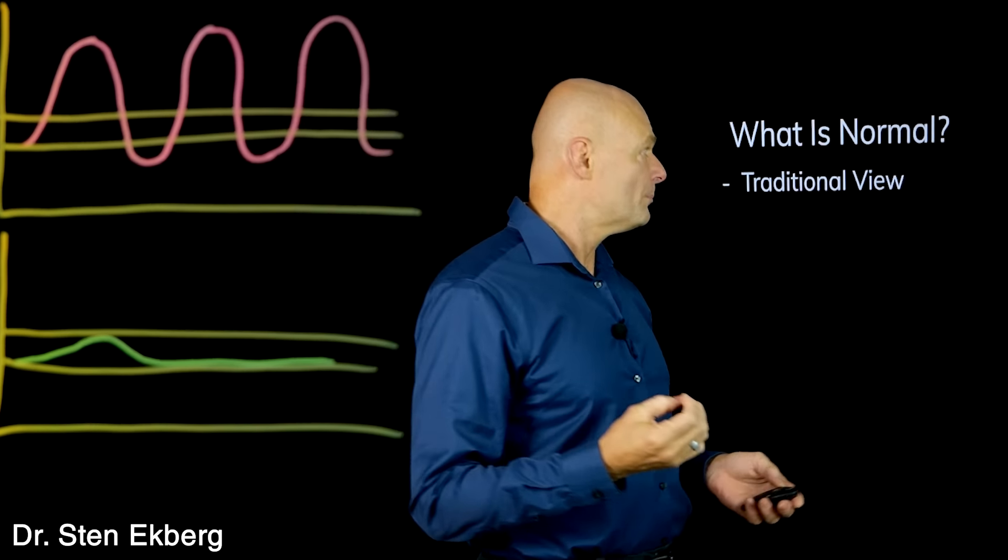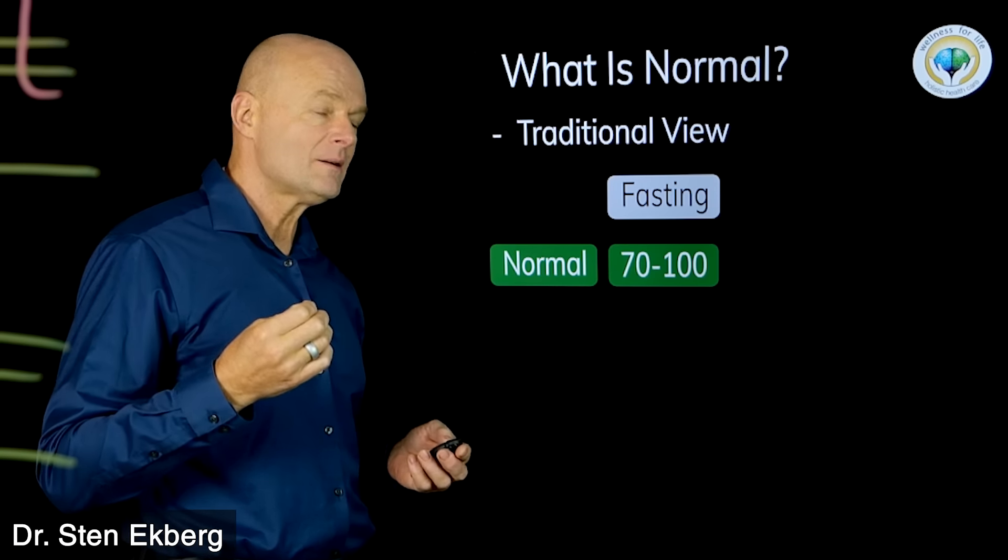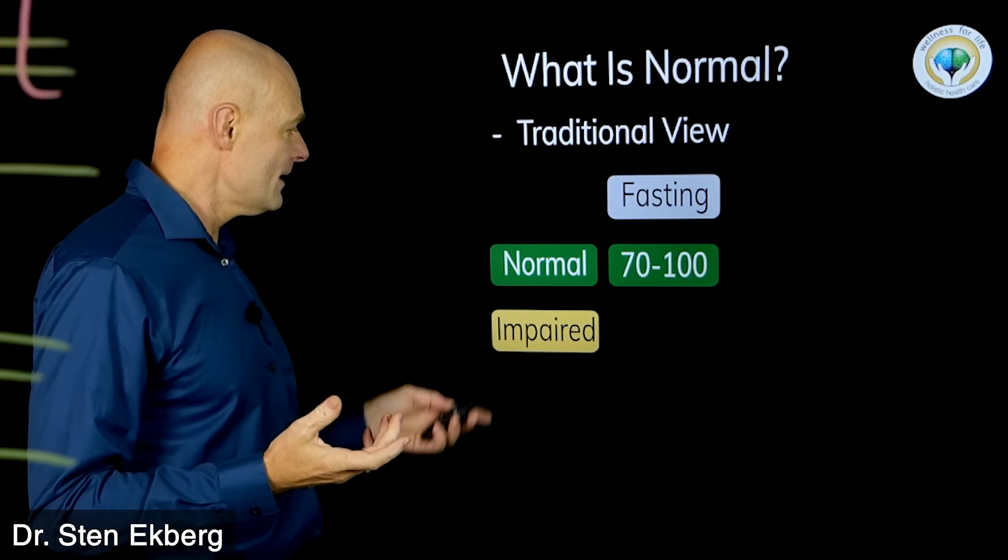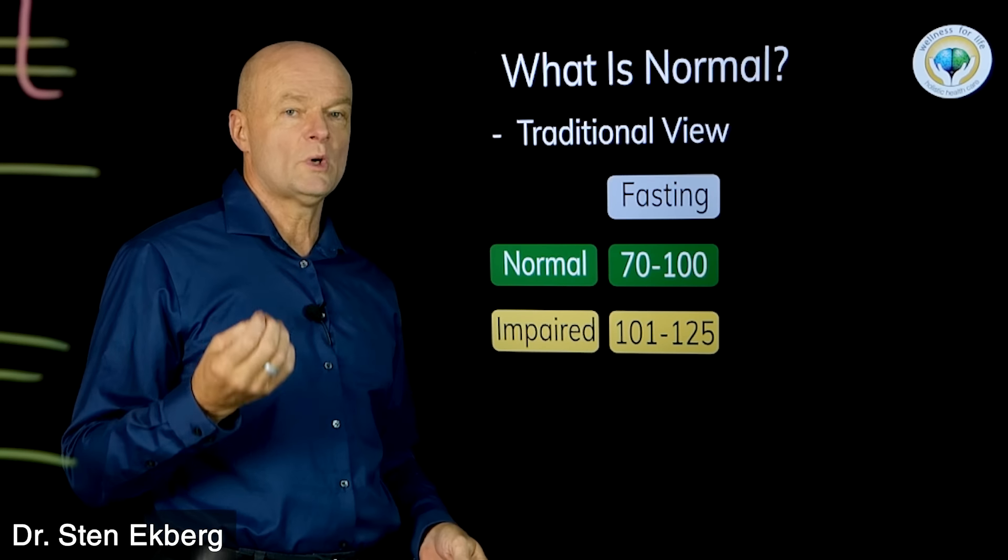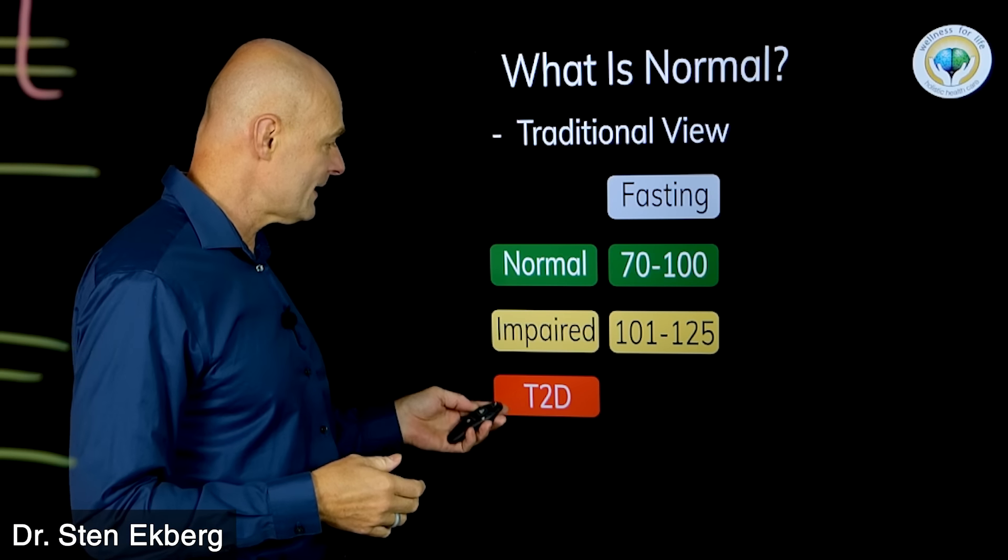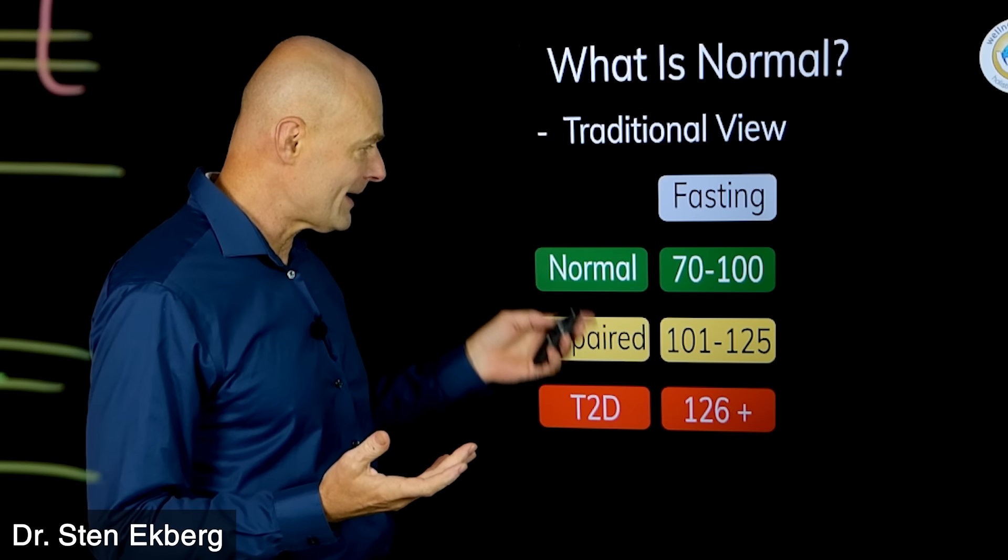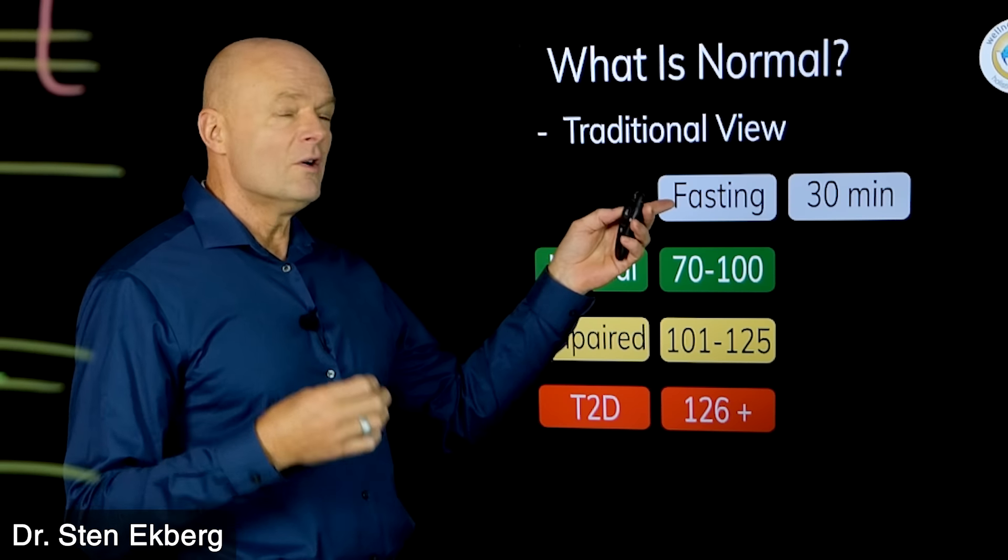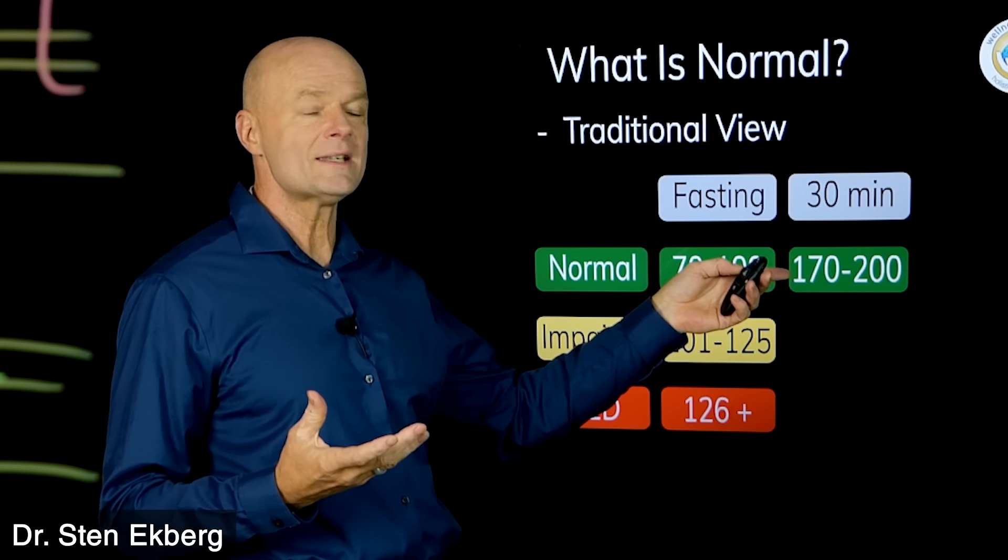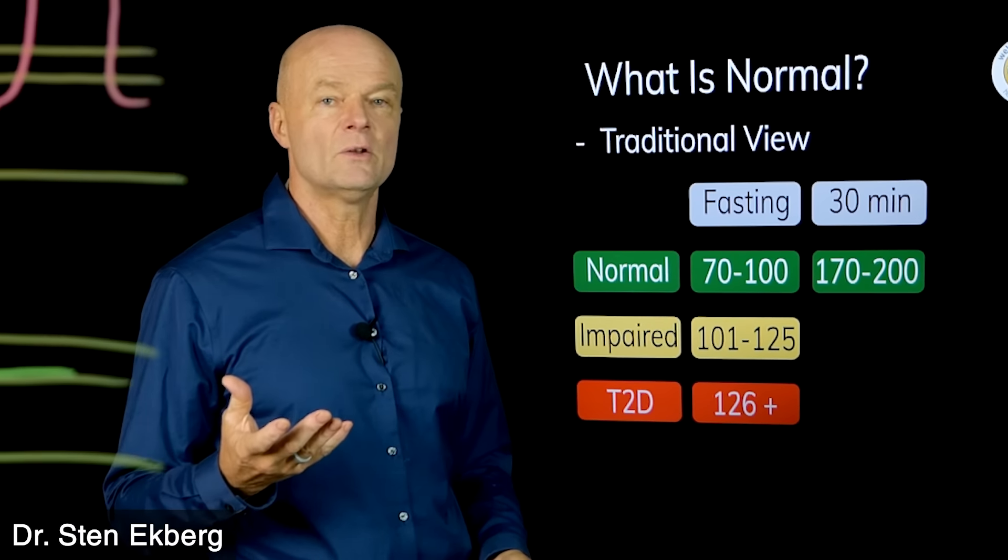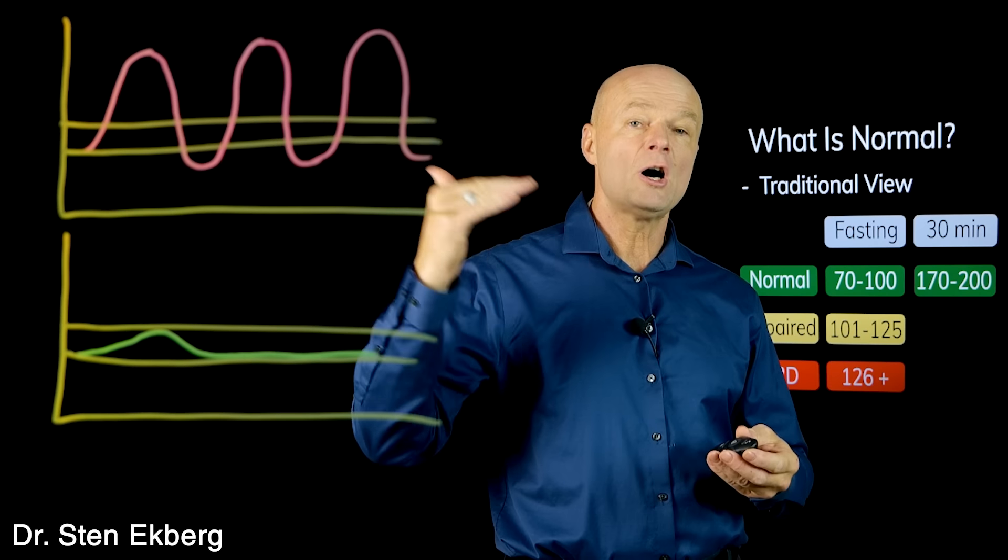If you do a little reading on what we think is normal as a society, the traditional view is that a normal fasting blood sugar should be between 70 and 100. But if you're impaired, meaning pre-diabetic, that would be between 101 to 125. If it goes above 125, it's called type 2 diabetes. So far that's not all that crazy, I sort of buy into this for the most part.